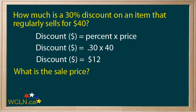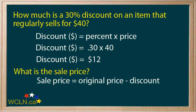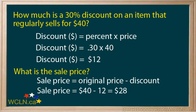Now we want to know what is the sale price. The sale price is equal to the original price minus the discount. So the sale price would be equal to $40, the original price, minus $12, the discount, to give us a sale price of $28.